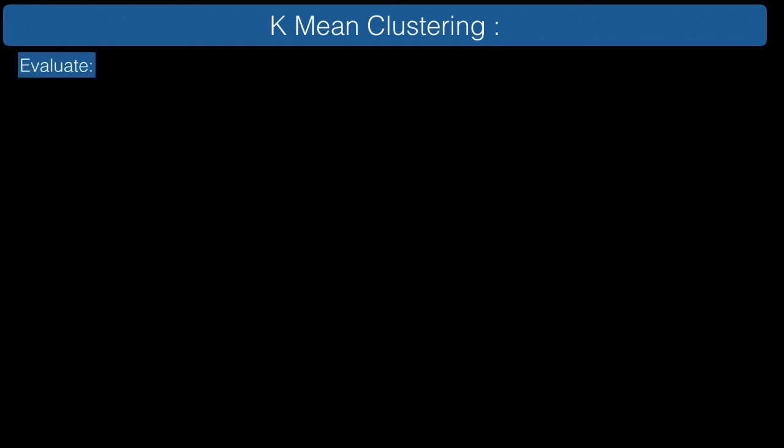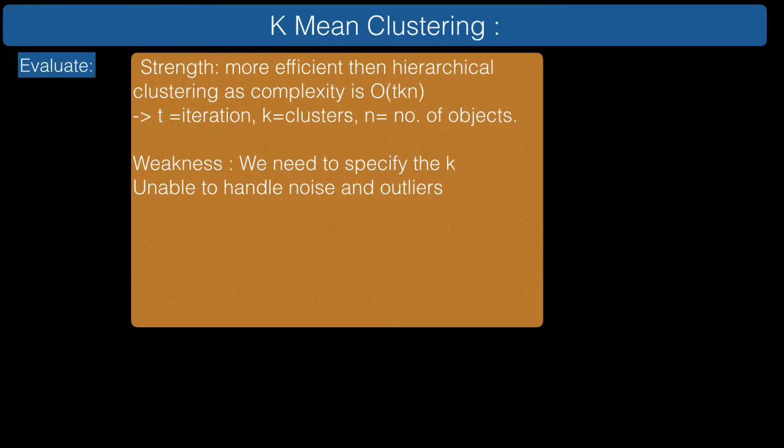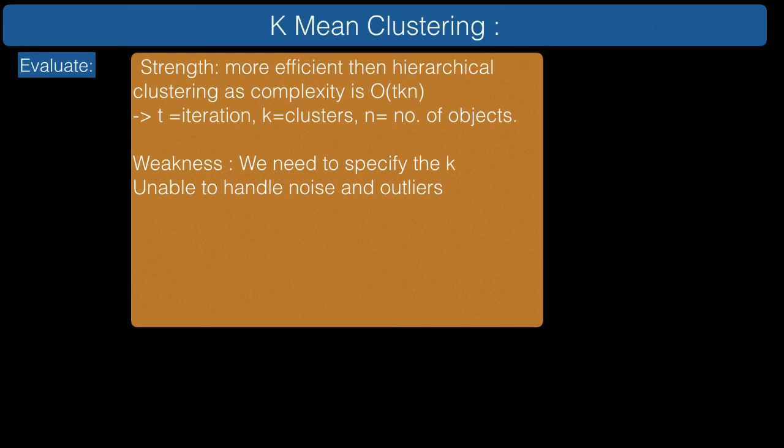Let's now see the strengths and weaknesses. The strength will be that the time complexity is O(tkn), where t is iterations, k is clusters, and n is number of objects, which is better than hierarchical clustering which was at least O(n squared). The weakness will be that it's sensitive to noise and that the number of clusters has to be predefined.